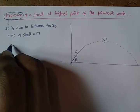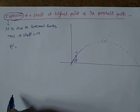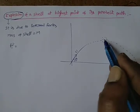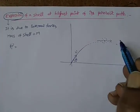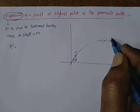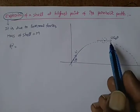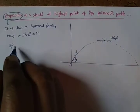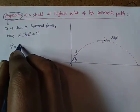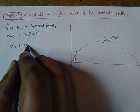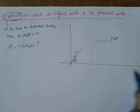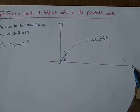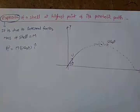By conservation of linear momentum, the initial momentum of the system before explosion is considered. Explosion takes place at the highest point of the projectile, where the velocity of the projectile is U cos theta only. So before explosion, the velocity of the shell is U cos theta at its highest point. Therefore, the initial momentum of the system is given by M U cos theta i-cap, where i-cap is the unit vector along the X axis and j-cap is the unit vector along the Y axis.